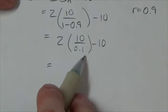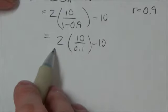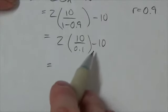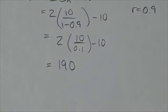10 divided by 0.1, or a tenth, is going to end up being 100. 2 times 100 is 200, minus 10 is 190. So the total vertical distance that the ball is going to travel through is going to end up being 190 feet.